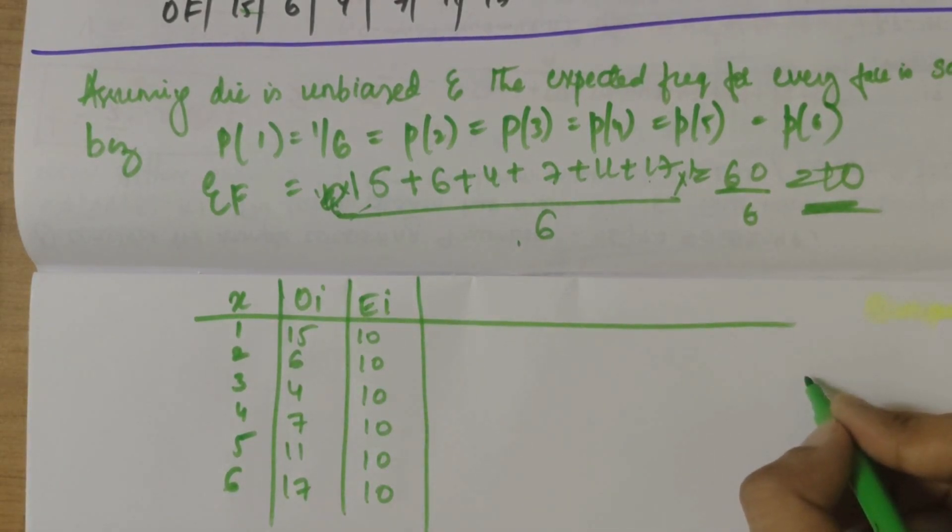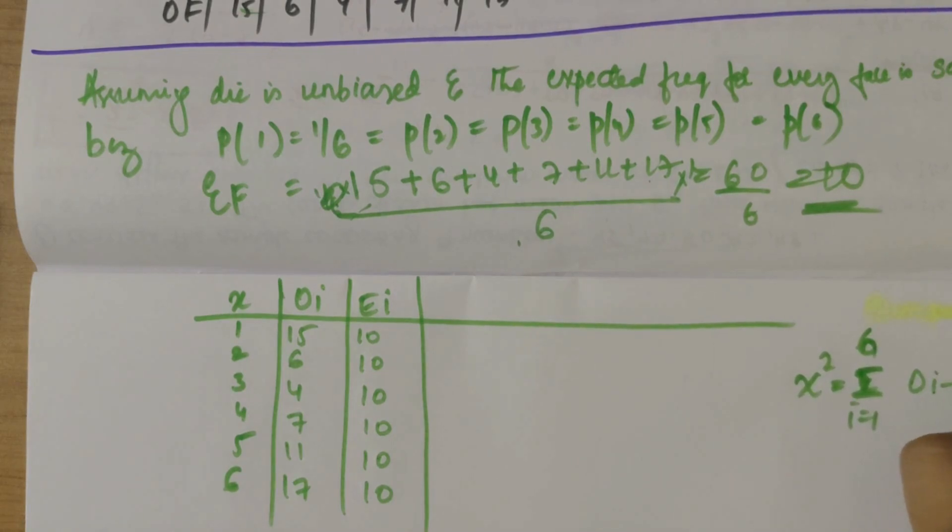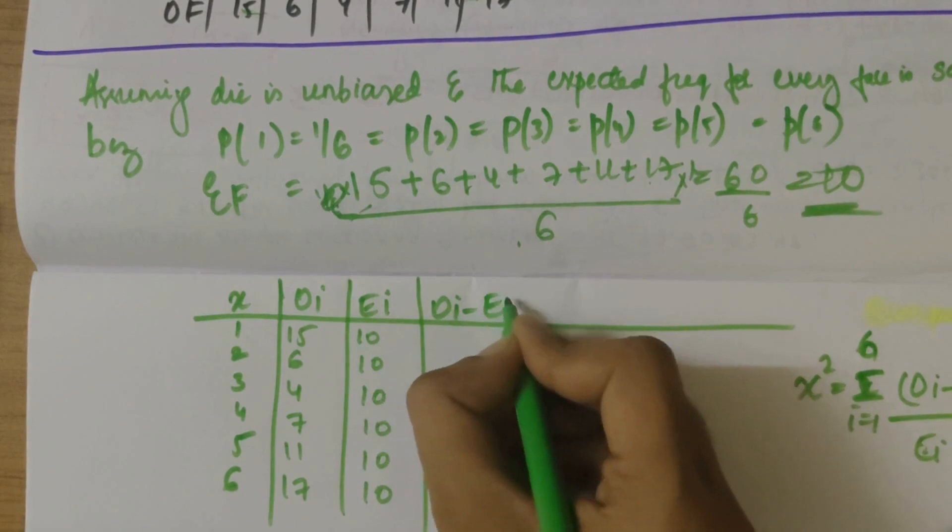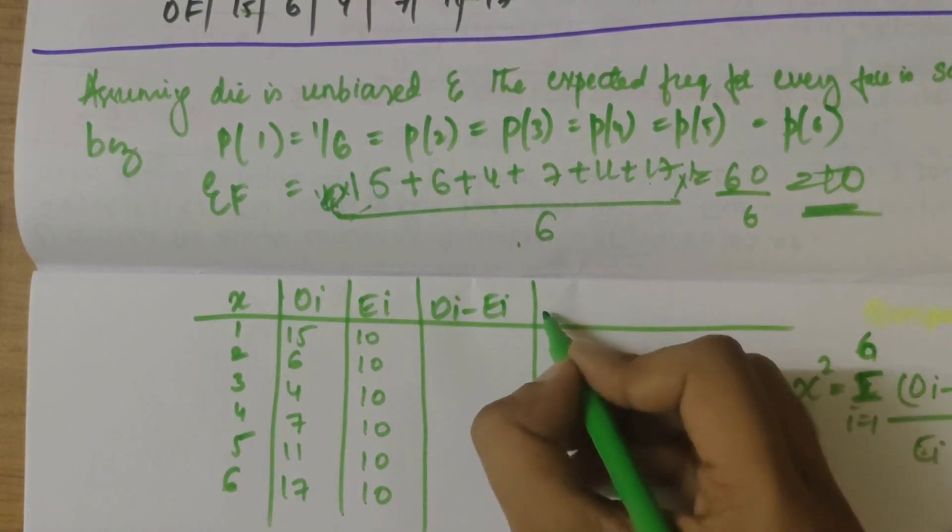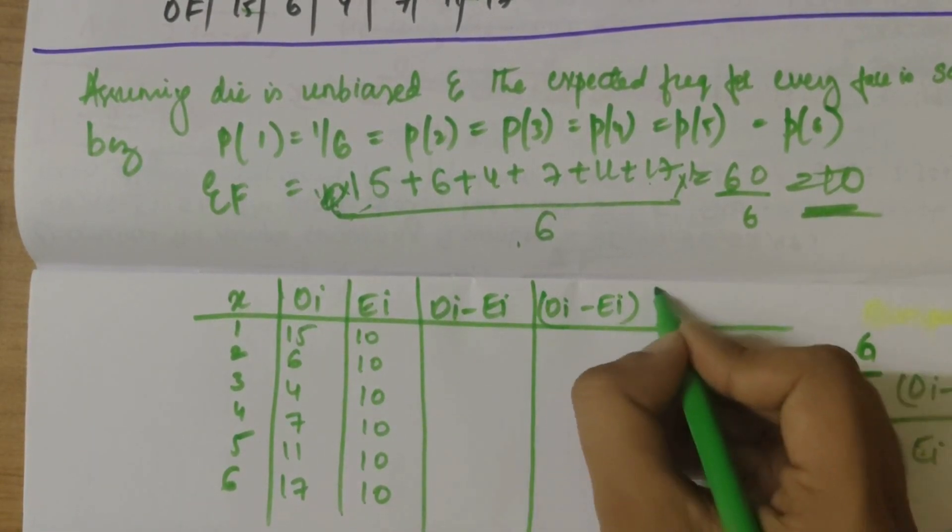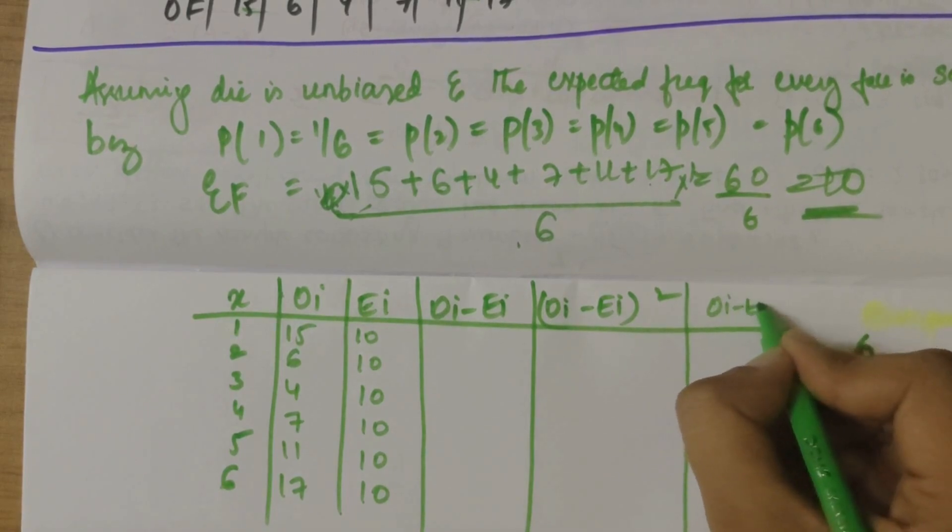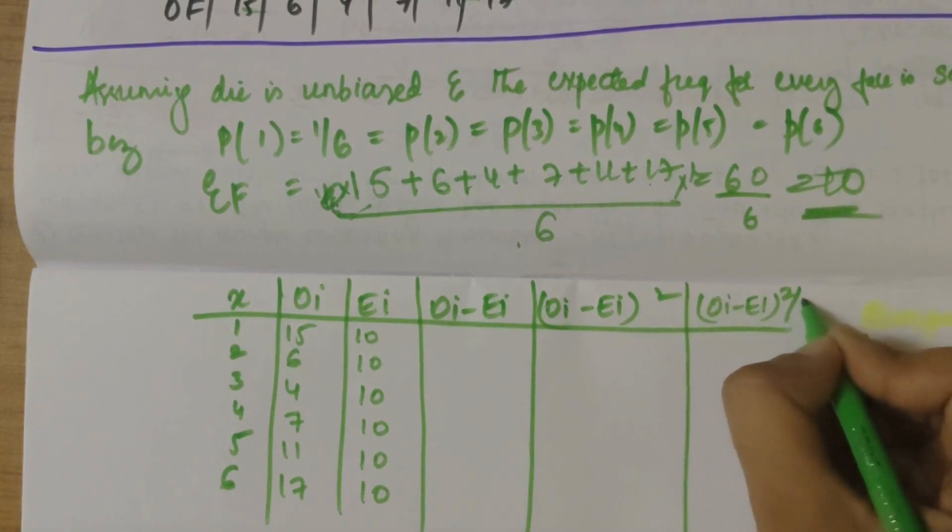So our formula for chi-square is summation i equals 1 to n, here n value is 6, OI minus EI whole square by EI. So first let's find out OI minus EI. Further we'll square it.